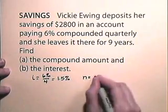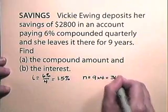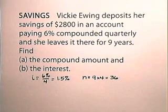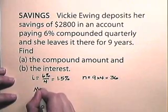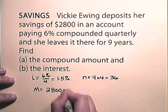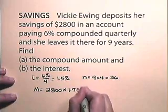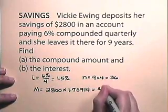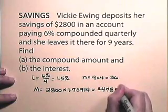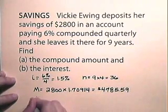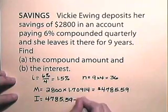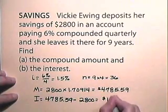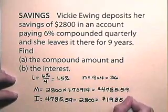The number of periods is 9 years × 4 periods each year = 36 periods. Looking in the table under the column headed 1.5% and across the row where n = 36, we find the compounding factor 1.70914. The compound amount is $2,800 × 1.70914 = $4,785.59. The interest is the difference between the compound amount and the principal, so she earned interest of $1,985.59.